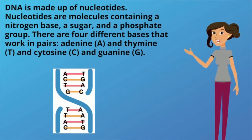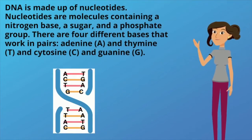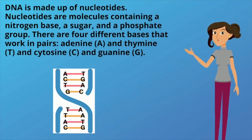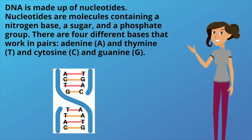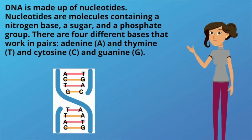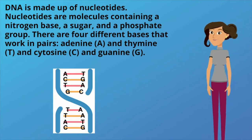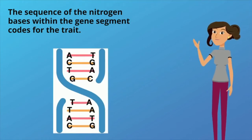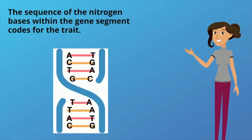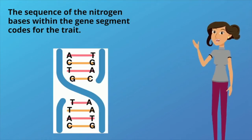DNA is made up of nucleotides. Nucleotides are molecules containing a nitrogen base, a sugar, and a phosphate group. There are four different bases that work in pairs: adenine and thymine, and cytosine and guanine. The sequence of the nitrogen bases within the gene segment codes for the trait.